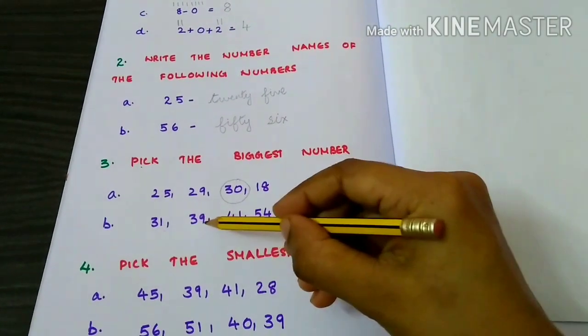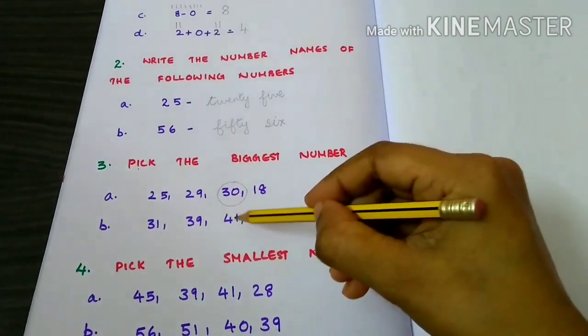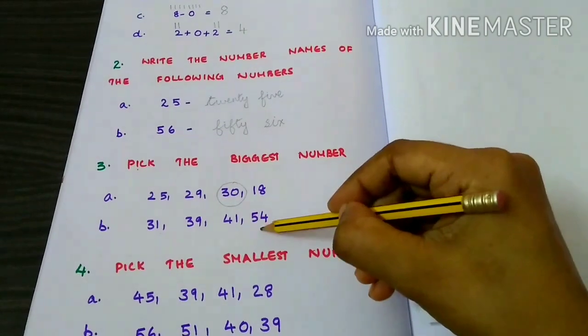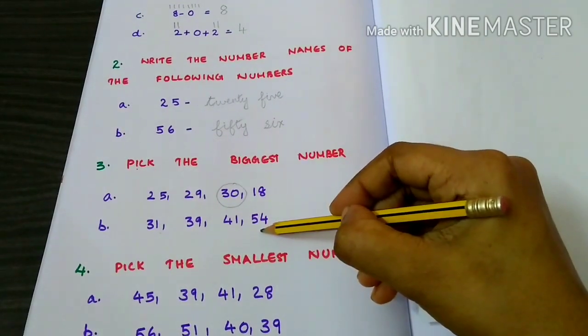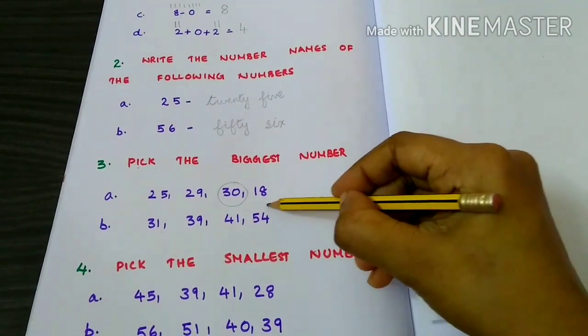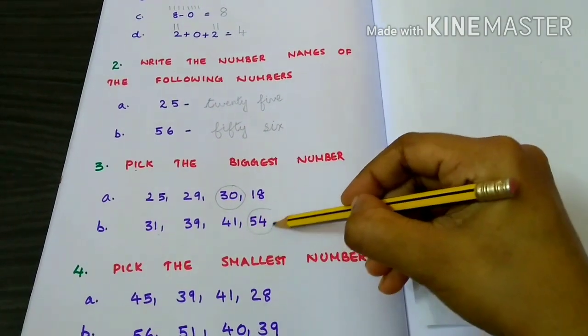31, 39, 41, 54. 54 is the biggest number.